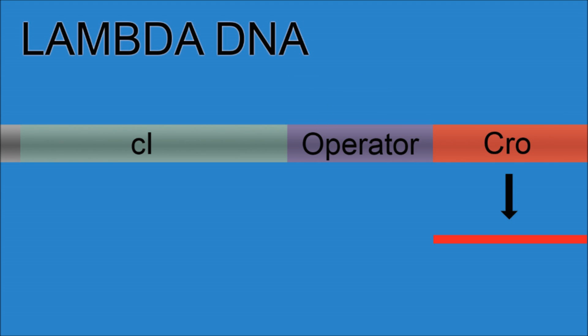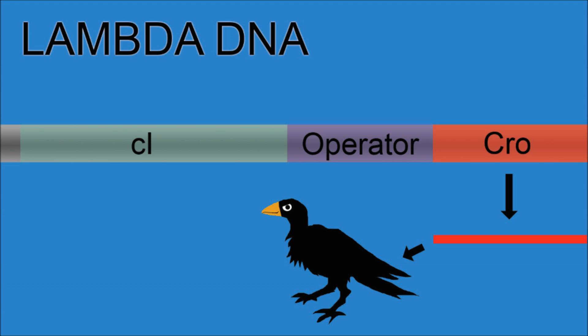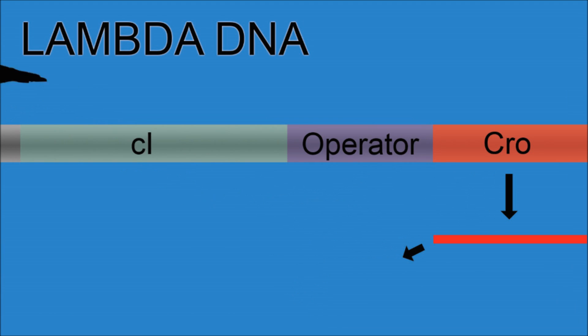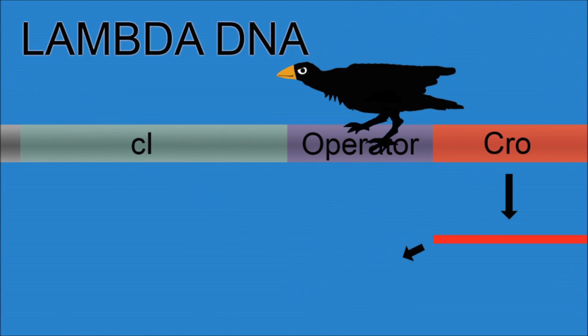When Cro is transcribed, the translated mRNA becomes an evil protein that spells the E. coli's doom. This protein also acts on the operator. It activates the Cro gene, causing yet more protein to be produced. And in this state, most of the virus's DNA gets transcribed. This protein also inhibits the C1 gene.